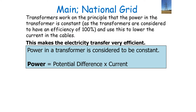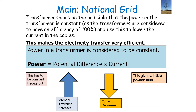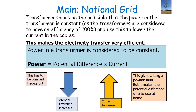In a national grid system, the transformer works on the principle that its efficiency is 100%, so the power in a transformer is constant — no power is lost. Inside a transformer, power equals potential difference times current. The electrical power is constant throughout a transformer. We can increase the potential difference and decrease the current for little power loss in the cable, or increase the current and decrease the potential difference — the power stays constant but the potential difference becomes safe to use at home.